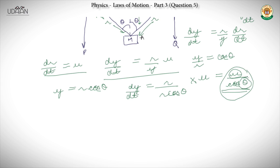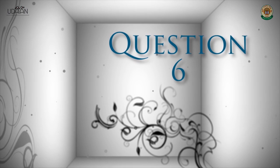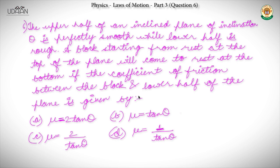The upper half of an inclined plane of inclination θ is perfectly smooth, while the lower half is rough. A block starting from rest at the top of the plane will come to rest at the bottom, if the coefficient of friction between the block and the lower half of the plane is given by — and we have 4 options.